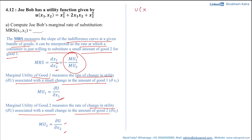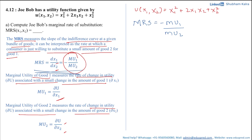Now let's calculate the MRS for the given function u(x1, x2) = x1² + 2x1x2 + x2². MRS equals minus mu1 divided by mu2. Let's first calculate mu1, which is the partial derivative of the utility function with respect to x1. Differentiating gives 2x1 + 2x2, which can be written as 2(x1 + x2).